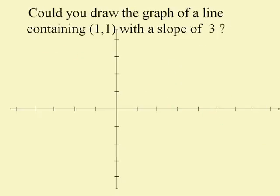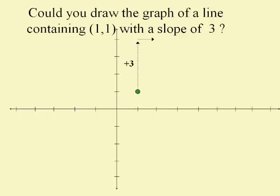Let's do another one. Let's draw the graph of a line containing the point (1, 1) with a slope of three. You need to remember that the number three as a fraction is three over one, so we go up three and over one to get the other point, and once we have two points we can draw the line.